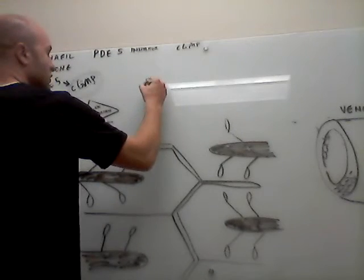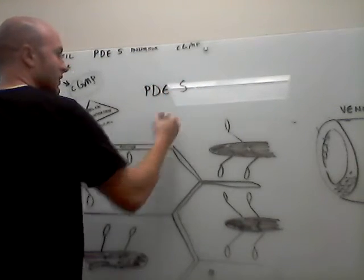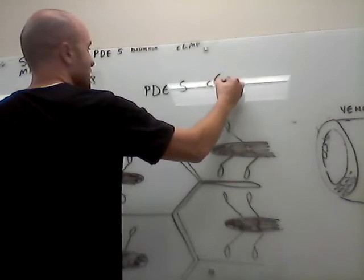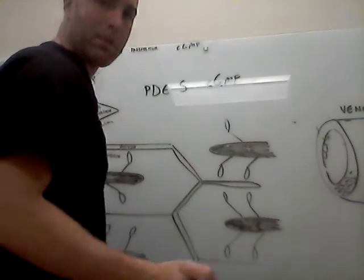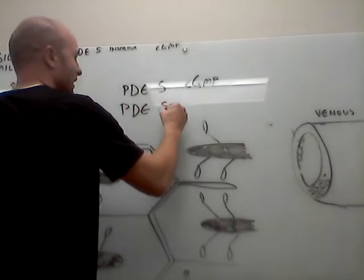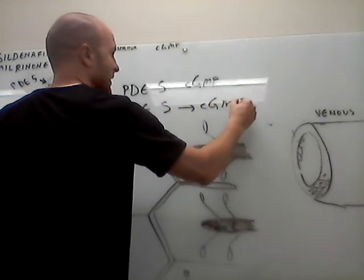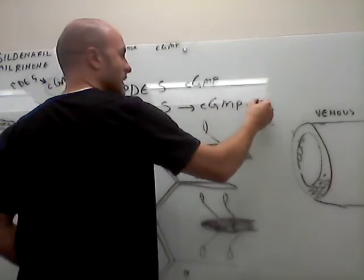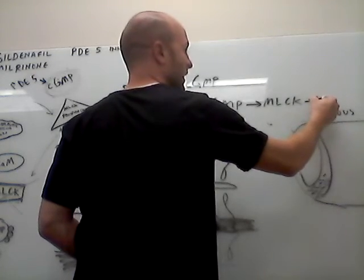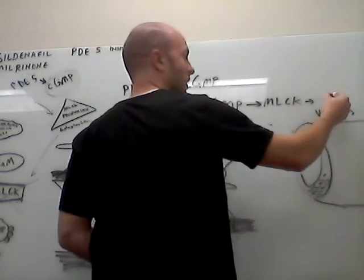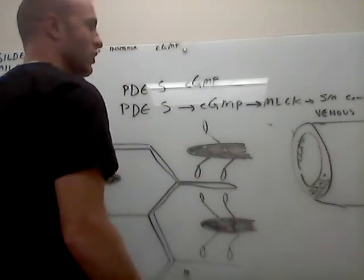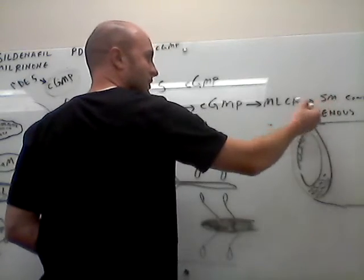So let me write this all out step by step. So here's phosphodiesterase-5. Phosphodiesterase-5 breaks down cyclic GMP. Cyclic GMP - I wrote that right in the spot. You can't see it, can you? Let me write it down here. Phosphodiesterase-5 breaks down cyclic GMP. Cyclic GMP dephosphorylates myosin light chain kinase. And myosin light chain kinase is the thing that causes smooth muscle contraction. So it narrows this, makes it smaller.